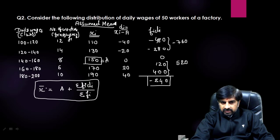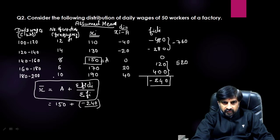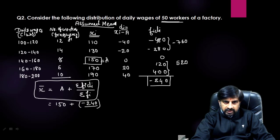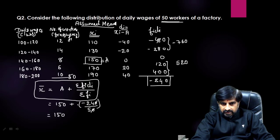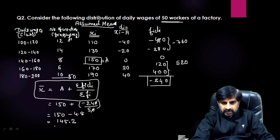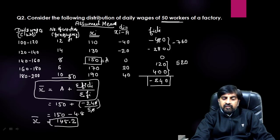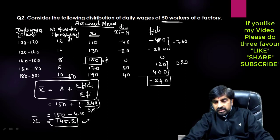Putting in the values: A = 150, Σ(fi×di) = −240. The sum of frequencies Σfi = 50, since the survey was conducted on 50 workers — let us verify: 2+3+... = 50, confirmed. So x̄ = 150 + (−240/50) = 150 − 4.8 = 145.2. The mean is 145.2 by the assumed mean method.